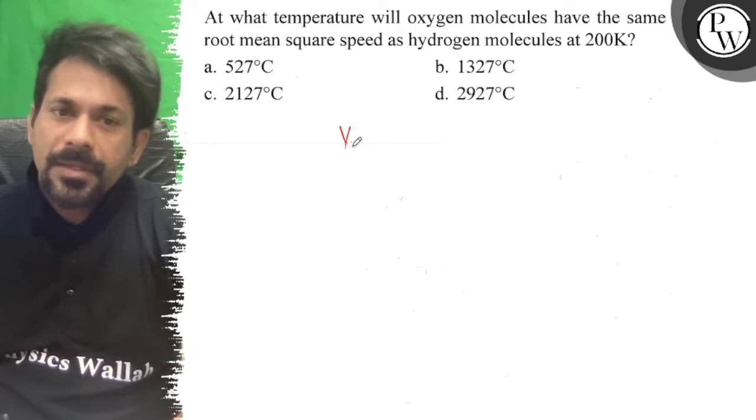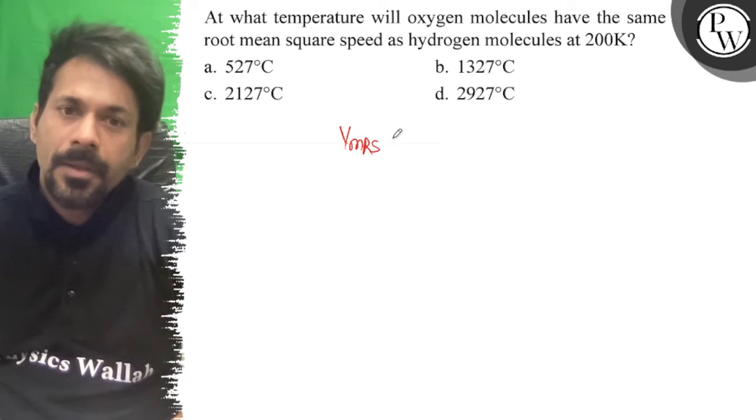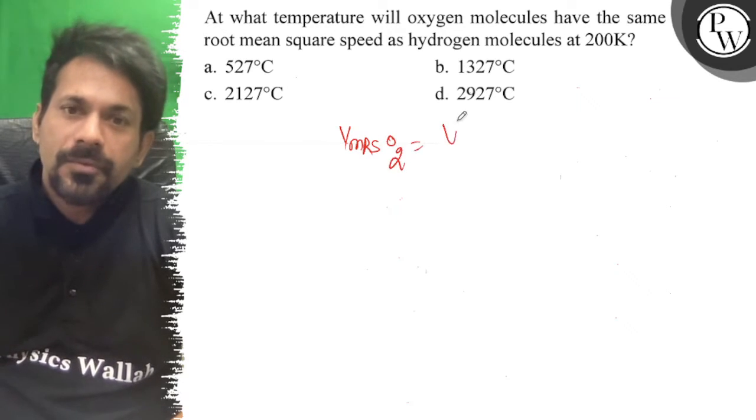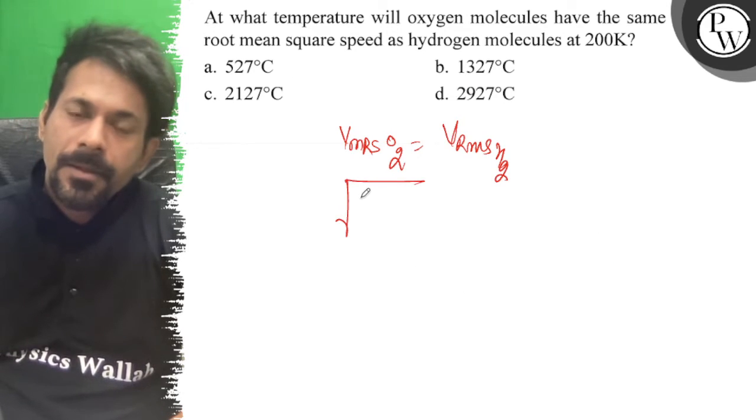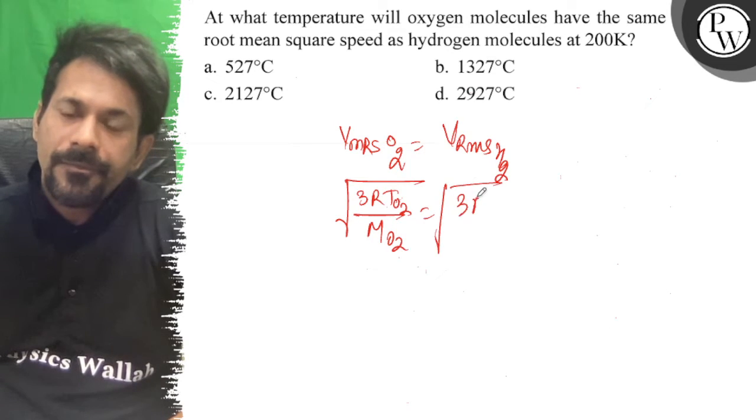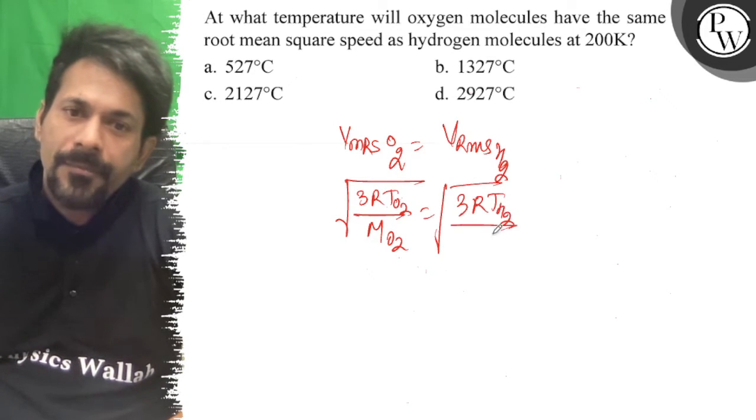So V_rms of oxygen equals V_rms of hydrogen. That is, square root of 3RT of oxygen divided by M of oxygen equals square root of 3RT of hydrogen divided by M of hydrogen.